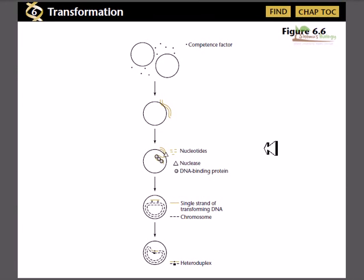Hello friends. In this video I am going to talk about the basic process of transformation. Transformation is the way or the process of transferring the genetic element from one bacterial cell to another bacterial cell. In this case, one bacterial cell produces those DNA segments and releases them into the outer environment, and other cells uptake it from the outer environment. So in this case, these two bacterial cells are not in direct contact.